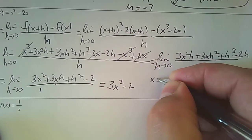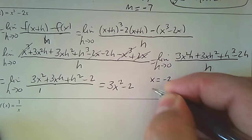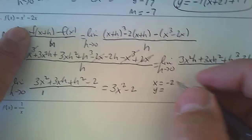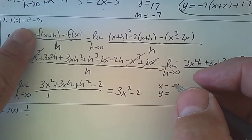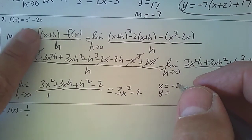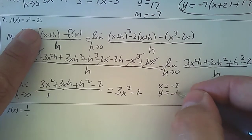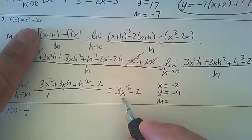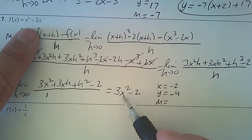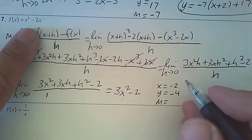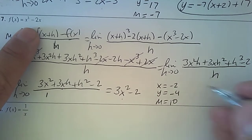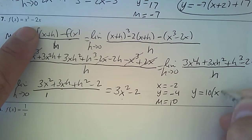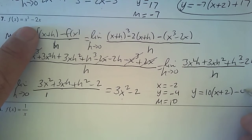Going back, x equals negative 2. Plugging negative 2 into the function x³ minus 2x gives negative 8 plus 4, which is negative 4. For the slope, plugging negative 2 into 3x² minus 2: negative 2 squared is 4, times 3 is 12, take away 2, which is 10. So the slope is 10, and the equation is y equals 10 times (x plus 2) subtract 4.